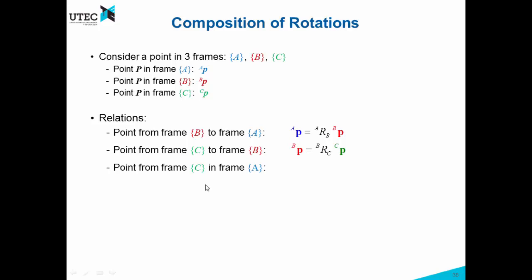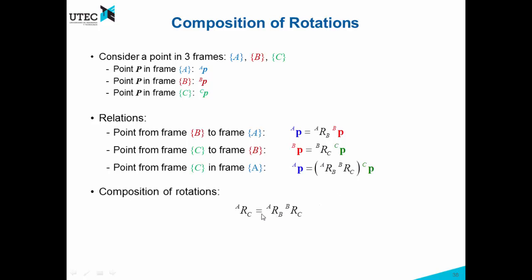Now if we want to represent in frame A a point that is initially in frame C, we need to replace this expression. If we do that, we obtain an expression that clearly represents frame C with respect to frame A — and we call that a composition of rotations. As you can see, in this expression we have C to B and then B to A, and it is as if these two elements cancel out.